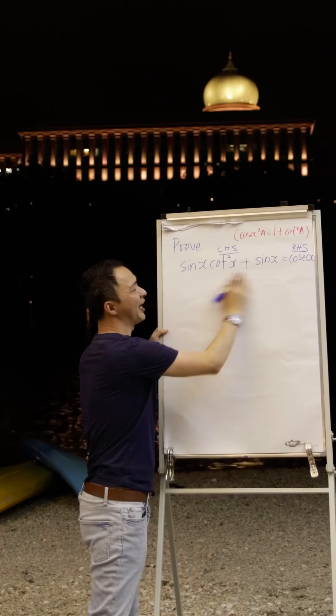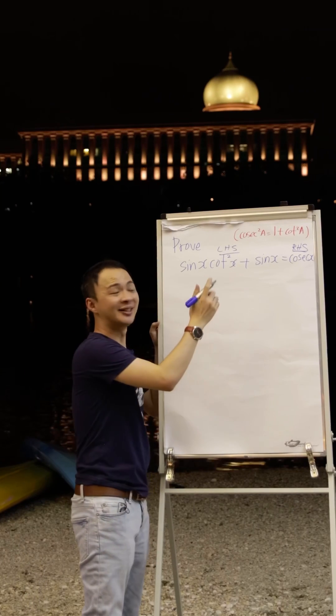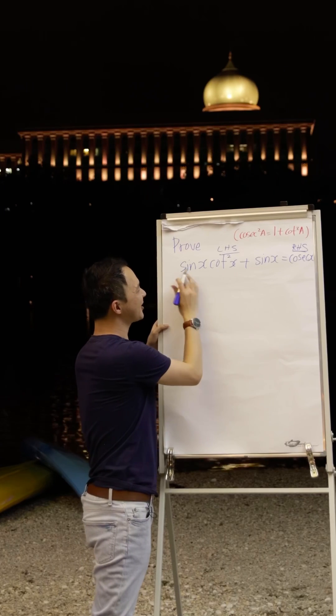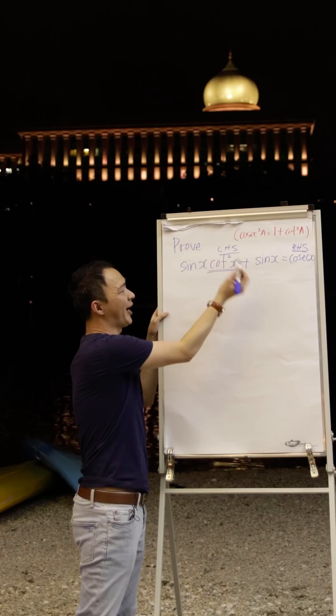So right now I want to prove my left hand side will equal to my right hand side. So what I will do right now is, I will try to see what I can change here. According to the information here, sine x, there's nothing I can change to sine x. So the only thing I can change will be my cotangent square x.